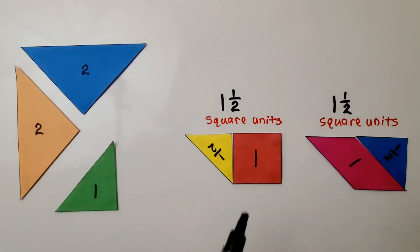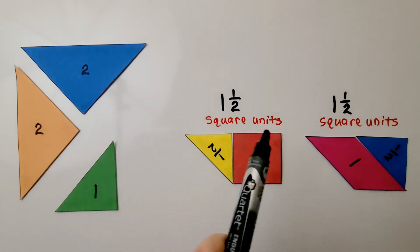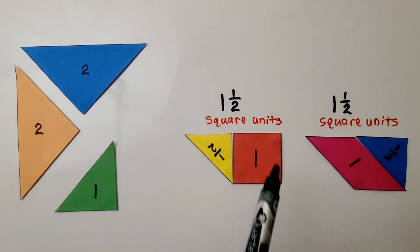If we put the red square together with the small yellow triangle, we'll have one and a half square units. And if we put the pink parallelogram with the blue triangle, we'll have one and a half square units. We can see they have the same area.